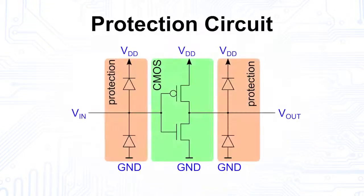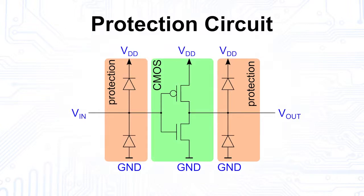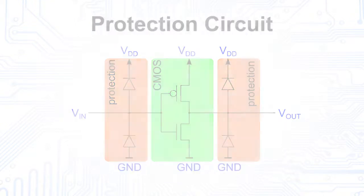One way to protect the CMOS device is to add additional diodes to the inputs and outputs. These start to conduct in the event of a positive or negative voltage peak and can thus prevent the CMOS device from being destroyed.